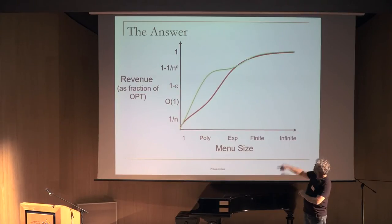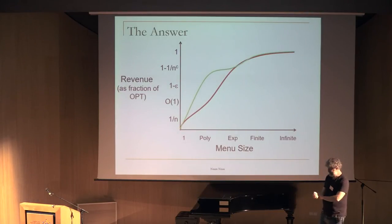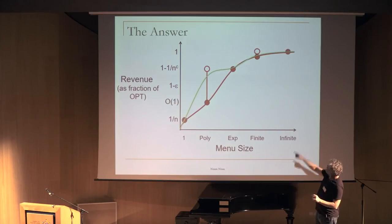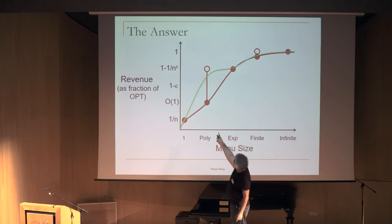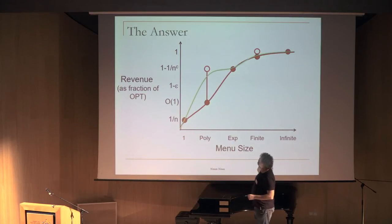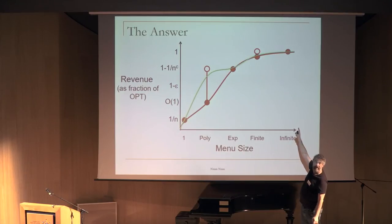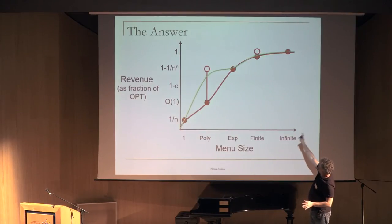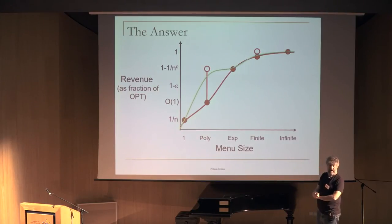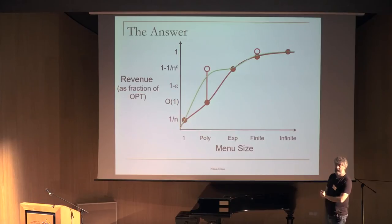Here's the answer — two graphs, red and green, and the truth is somewhere between them. Full red points are possibility results: there is a way to have a polynomial-size menu giving a constant revenue fraction. Empty circles are impossibility results: for example, it is not possible with a finite menu to get the optimal (full fraction of 1) revenue.